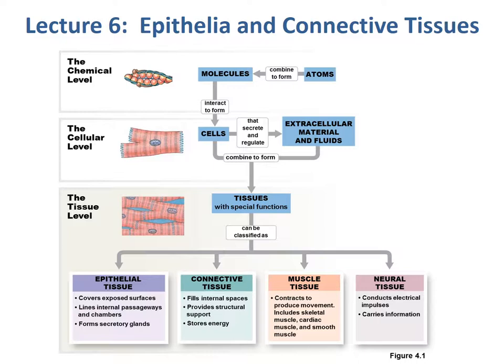Muscle tissue contracts to produce movement and is found in skeletal muscle, cardiac, and smooth. Neural tissue is going to conduct electrical impulses and carry information. The focus of this lecture will be on epithelial tissue and connective tissue. Epithelial tissue covers the exposed surfaces and secretes different compounds, whereas connective tissue connects spaces together, fills a lot of internal space, provides structural support, and stores energy.